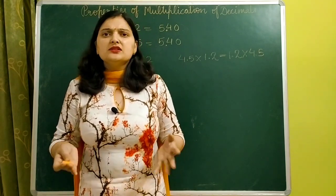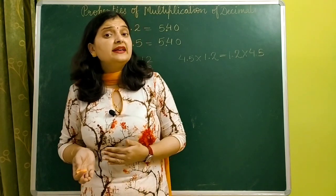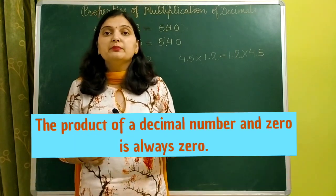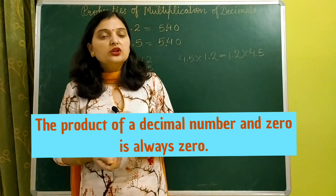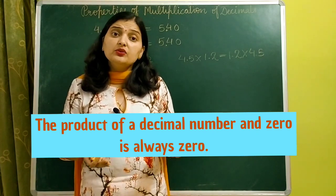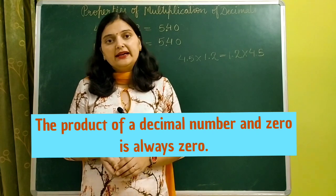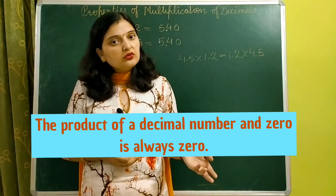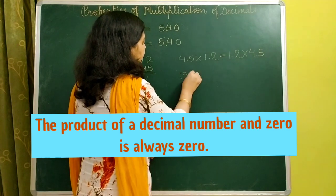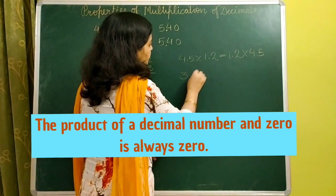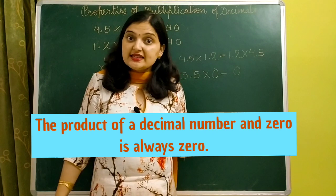Coming to the next property, which is very easy: whenever we multiply a decimal number by zero, we always get zero. This same property holds in fractions as well — whenever we multiply any number by zero, we always get zero. So whenever we multiply any decimal number by zero, we get zero.